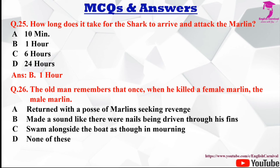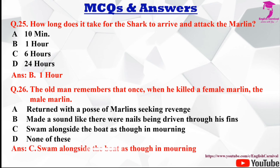Question number twenty-six: The old man remembers that once when he killed a female marlin, the male marlin did what? Options are A returned with a pod of marlins seeking revenge, B made a sound like nails being driven through his fins, C swam alongside the boat as though in mourning, and D none of these. The correct answer is C, swam alongside the boat as though in mourning.